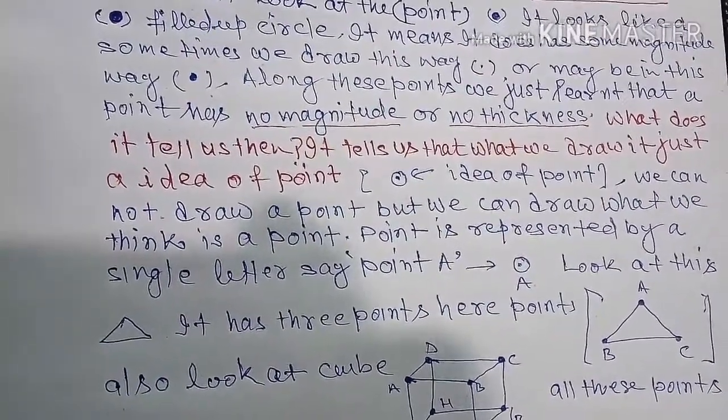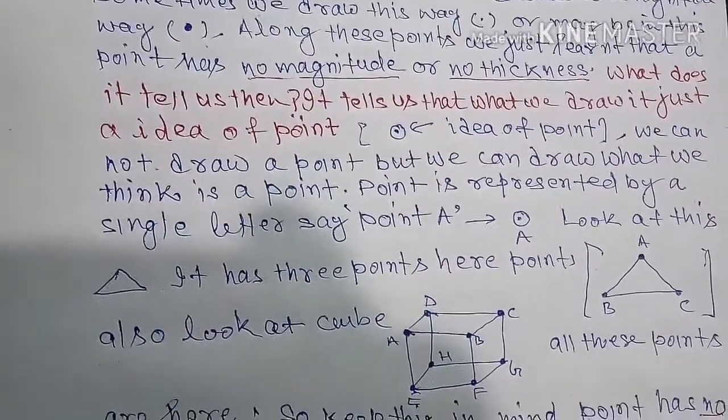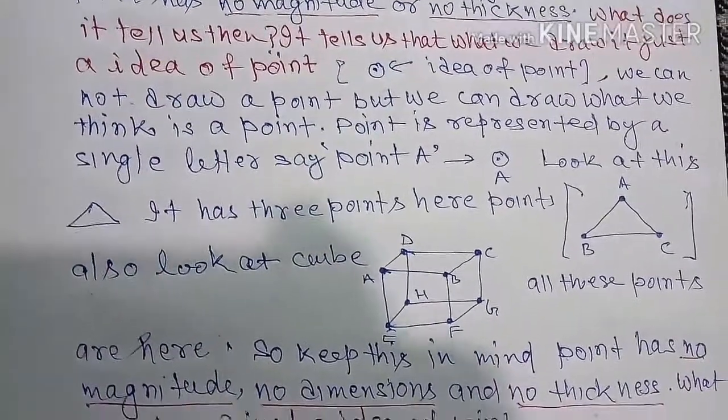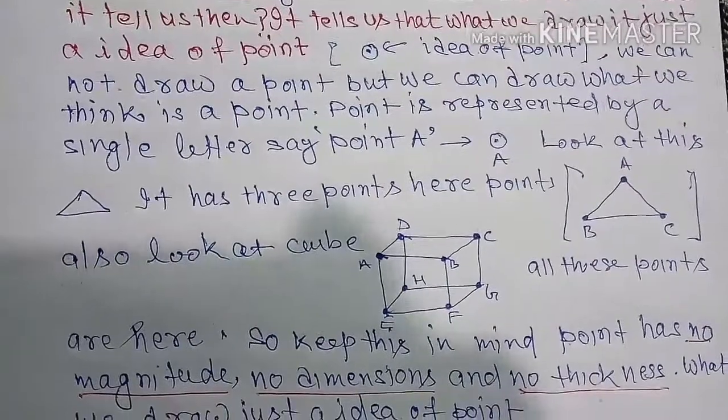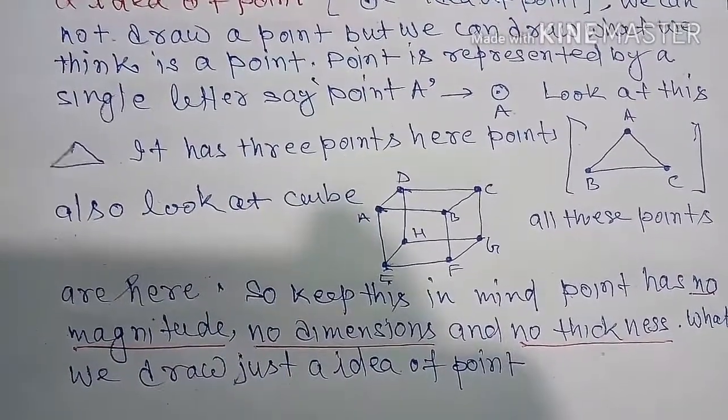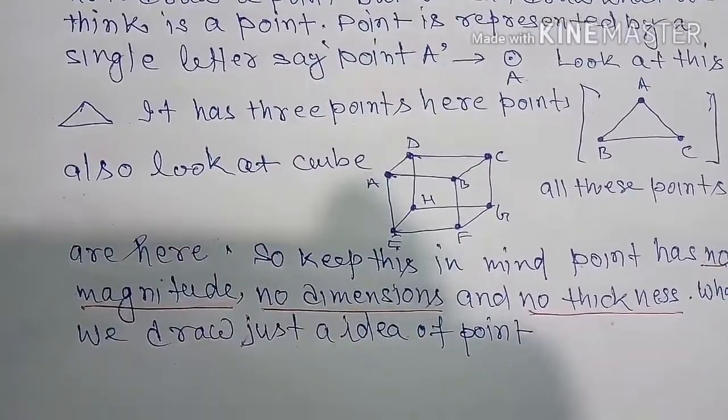Also look at this cube. There are eight points here. All these points are here. So keep this in mind: point has no magnitude, no dimension and no thickness. But we draw just the idea of points.